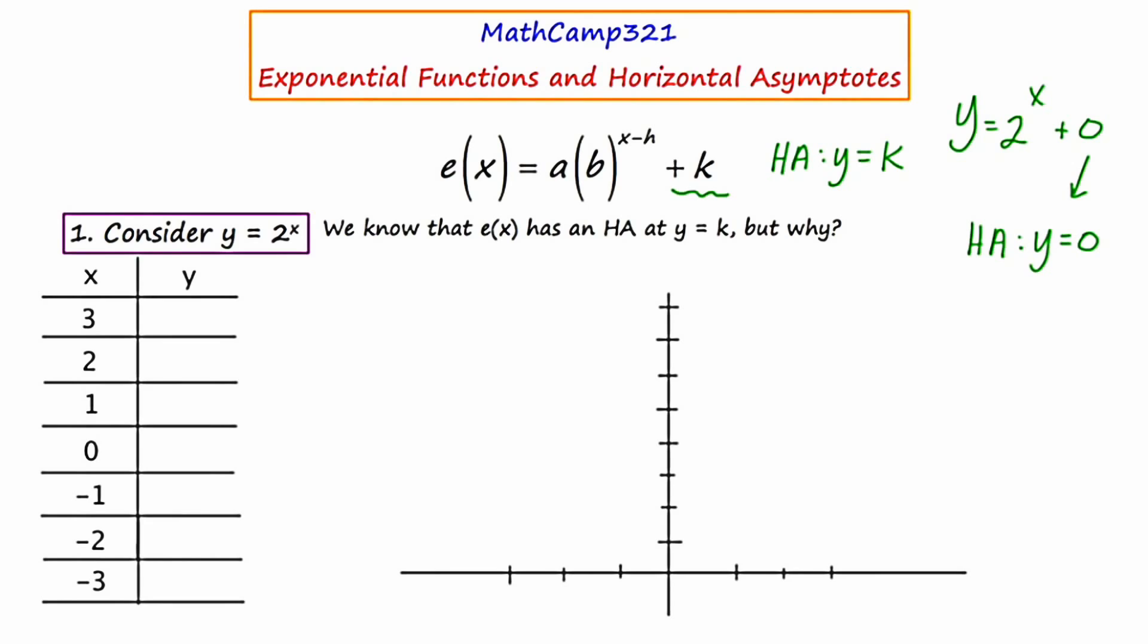So to start, if I were to substitute a three in for x, I would end up getting two to the power of three or two cubed, which is eight. If I were to plug in two, I would get two squared, which is four. If I were to substitute in one, I would get two to the first power, which is two. If I were to substitute in zero, I would get two to the power of zero, which is one.